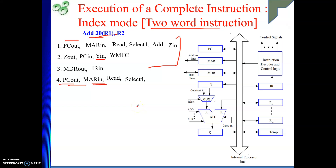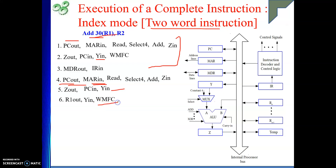Then read. And then select 4 — because I need to increment the PC to point to the next instruction. Add, then Z in, then Z out, PC in, Y in. In the meantime, before WMFC, I can also get R1 into the Y register. So R1 out, Y in, then WMFC. That means we have incremented PC and also stored R1's content in the Y register, since R1 content will be added with this 30.